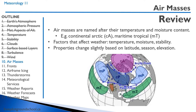Air masses are named after their temperature and moisture contents. For example, continental arctic is a dry, cold air mass, while maritime tropical is a wet, hot air mass. Factors that affect the weather are temperature, moisture, and stability, and the air mass properties can change slightly based on latitude, season, and elevation.